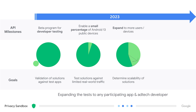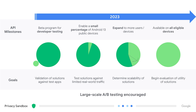Successful testing would then allow us to expand the availability to more users and devices, while opening the doors to allow any app and ad-tech partner to determine the scalability of their API solutions. And finally, we would expand the Privacy Sandbox to be available on all eligible Android devices. This is when we expect a lot of industry to begin large-scale A/B testing to evaluate the full set of API solutions for their utility.